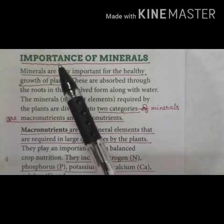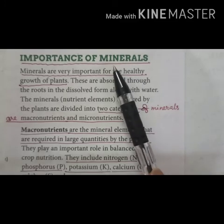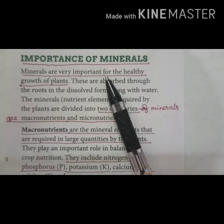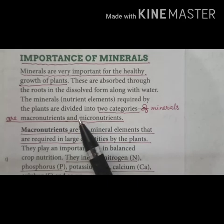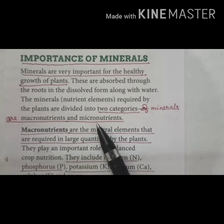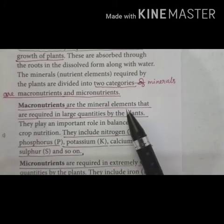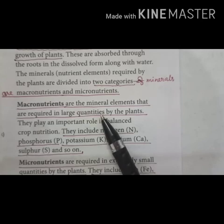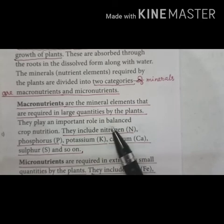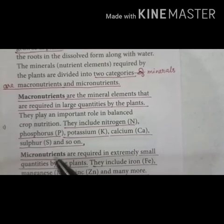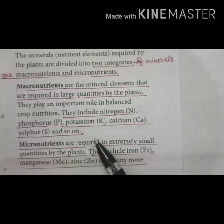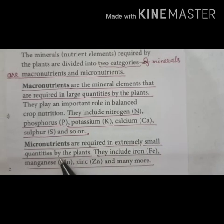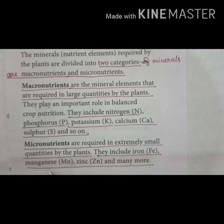Next, let's discuss the importance of minerals. Roots absorb water and minerals from the soil. Minerals are very important for the healthy growth of plants. There are two main categories: macronutrients and micronutrients. Macronutrients are mineral elements required in large quantities by plants, and they include nitrogen, phosphorus, potassium, calcium, and sulfur. Micronutrients are required in extremely small quantities and include iron, manganese, zinc, and many more.